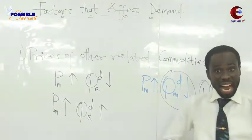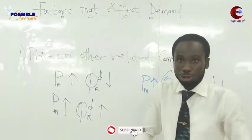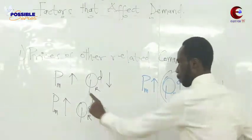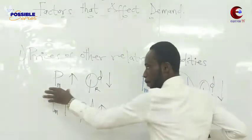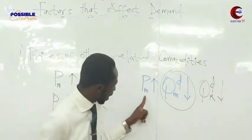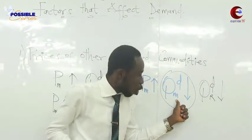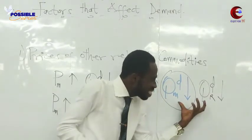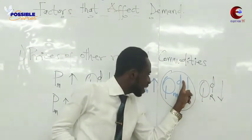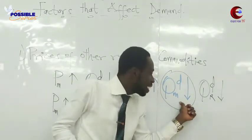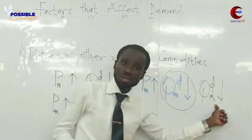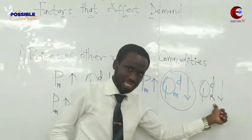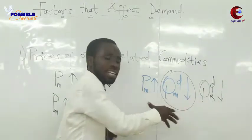Why are they complements? Because they are used together — they are joint commodities, complementing each other. When the price of Milo goes up, quantity demanded of Milo comes down, and when quantity demanded of Milo comes down, quantity demanded of Richoku also comes down. It means we use these two commodities together. For example, if people are not buying toothpaste, they are not going to buy a toothbrush. If people are not buying cars, they are not going to buy petrol.